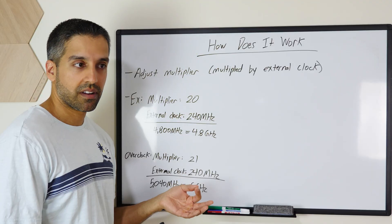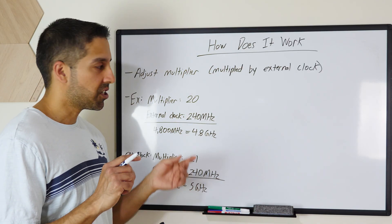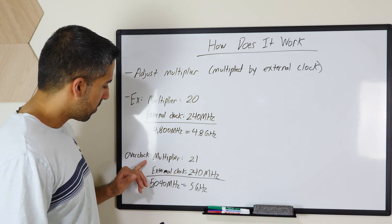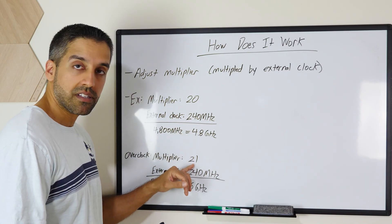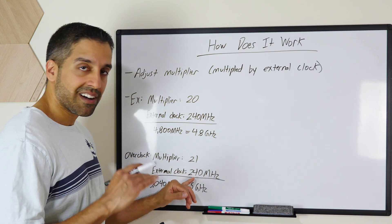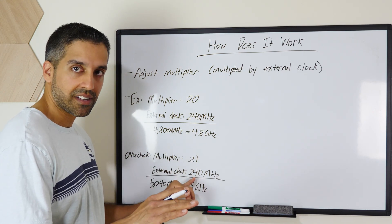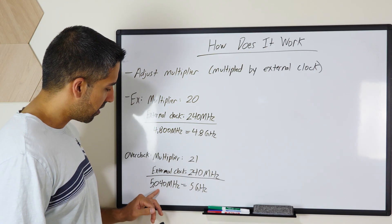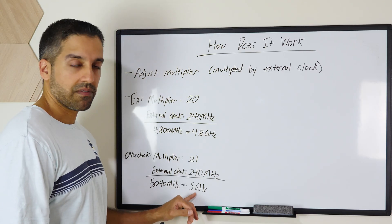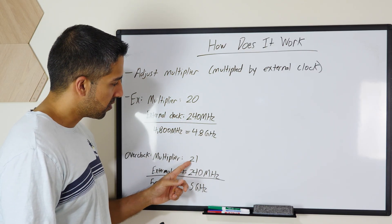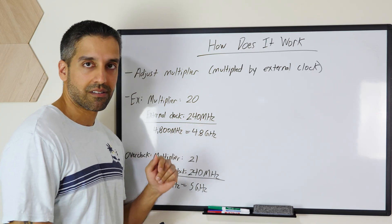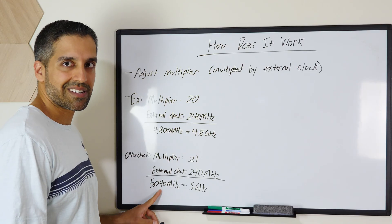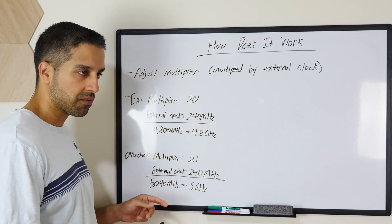If you wanted to overclock in small increments, you would change the multiplier by one. In this example, you change the multiplier from 20 to 21 — increasing it by just one. The external clock does not change; it's still 240 megahertz. By overclocking, you're doing 21 times 240, which turns into 5,040 megahertz — or 5 gigahertz. So by overclocking by one multiplier step, you increased your clock speed by 240 megahertz. Honestly, between 4,800 and 5,040, it's like nothing — just peanuts — but that is the basic concept of what you'd be adjusting.